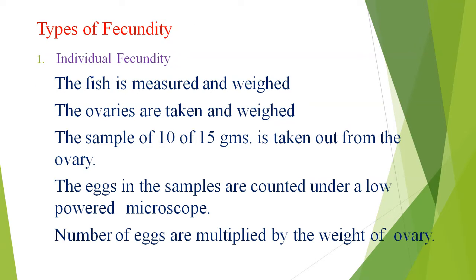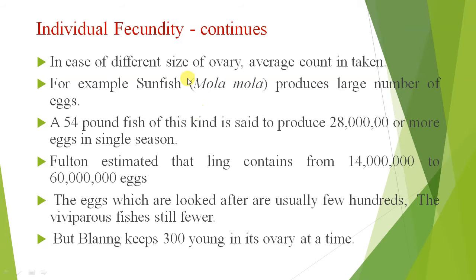What are the types of fertility? One is individual fertility. The fish is measured and weighed, the ovaries are taken and weighed, a sample of 10 or 15 grams is taken out from the ovary, and the eggs in the sample are counted under a low-powered microscope. The number of eggs is multiplied by the weight of the ovary. For different sizes of ovary, average count is taken.